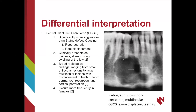Next, central giant cell granuloma should be considered in the differential diagnosis for Staphne defect. Similar to Staphne defect, central giant cell granuloma is an asymptomatic, slow-growing lesion. However, CGCG is significantly more aggressive than Staphne defect lesions and often causes root resorption with displacement. Staphne defect lesions are non-odontogenic and take place below the mandibular canal or in the ramus, and due to this, it is almost never associated with root apices. CGCG can present as a wide variety of lesions, ranging from small unilocular lesions to multilocular lesions large enough to displace teeth, and can display root resorption and cortical plate perforation. CGCG also has a slight predilection for females.